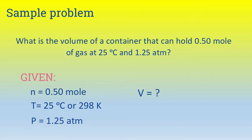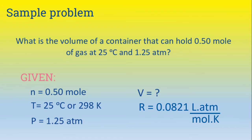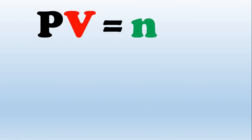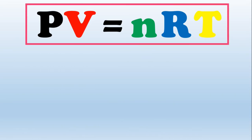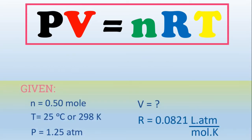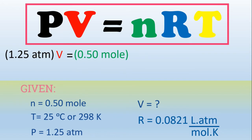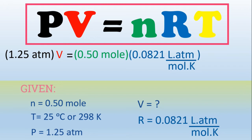V is what we are looking for, and R is equal to 0.0821 liters ATM over mole Kelvin. Using the Ideal Gas Law equation PV equals NRT, we substitute: P equals 1.25 ATM, V is the unknown, N equals 0.5 mole, R equals 0.0821 liters ATM over mole Kelvin, and T equals 298 Kelvin.